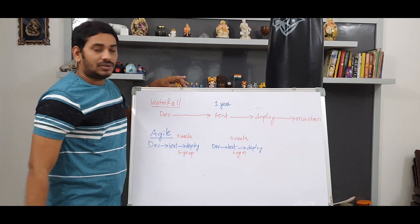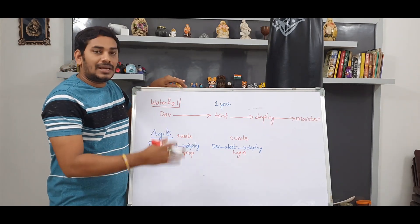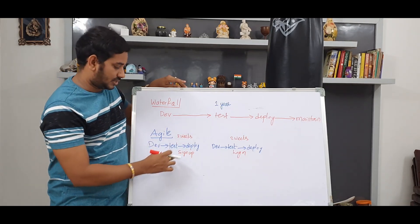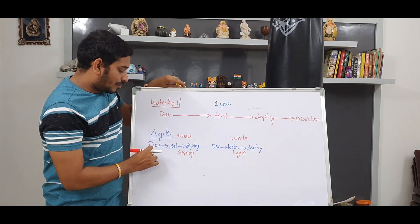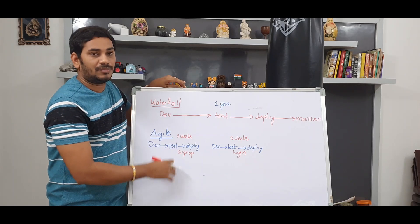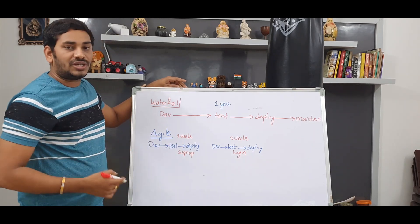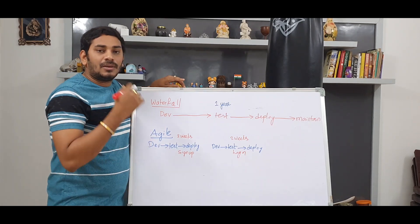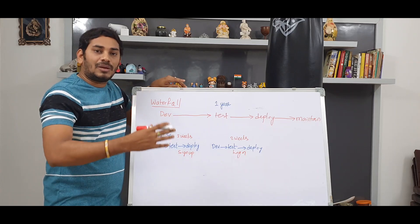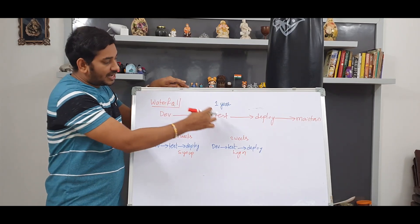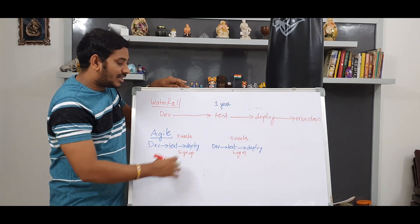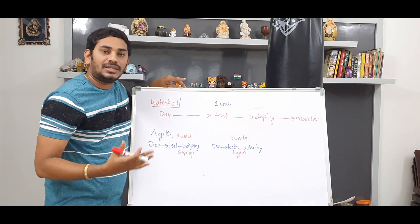You can divide work using the Agile model. For example, you can assign two-week sprints. First, you release the Sign-up module. The Sign-up module has two weeks: one week for development, and one week for testing and deployment. The results are faster and more effective. If you have a long application, you can divide the defects and the production application remains stable. There is more time for testing, fewer defects, and the final product is more polished.